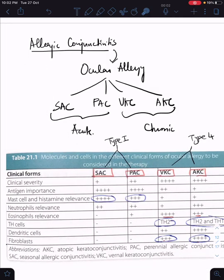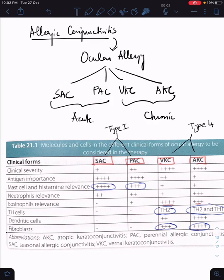I'll quickly show you two important tables. First, allergic conjunctivitis or ocular allergy can be manifested as four forms: two acute and two chronic. The two acute forms are SAC or seasonal allergic conjunctivitis and perennial allergic conjunctivitis. The chronic ones are vernal keratoconjunctivitis and atopic keratoconjunctivitis. Note that only the chronic forms have keratoconjunctivitis.